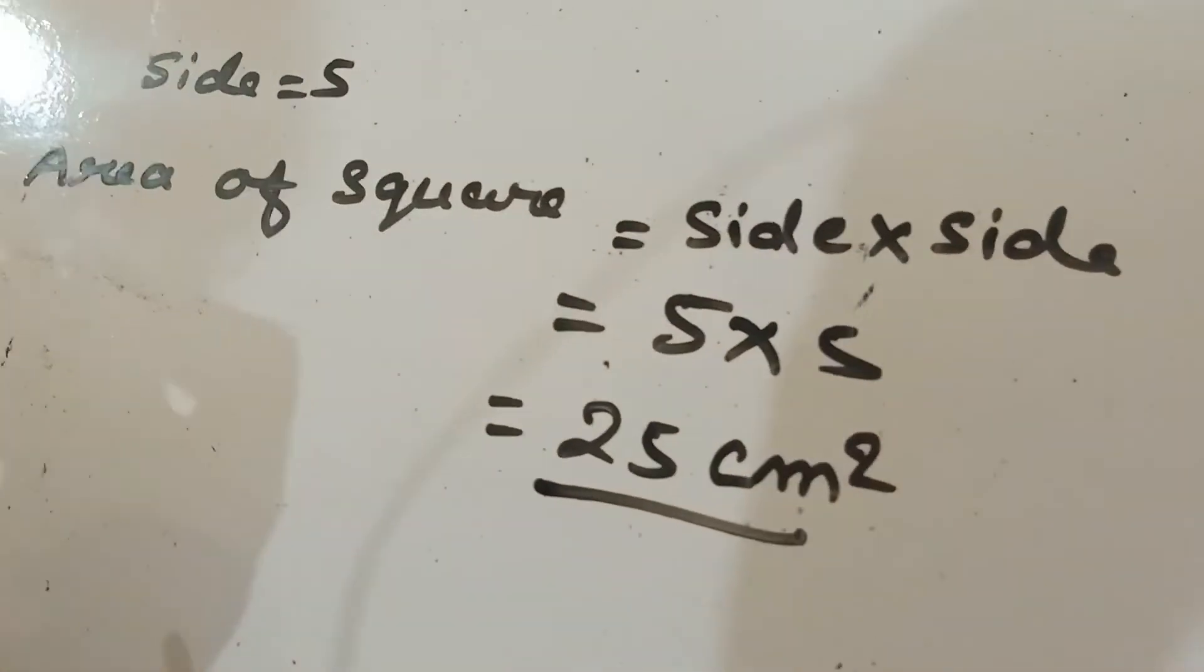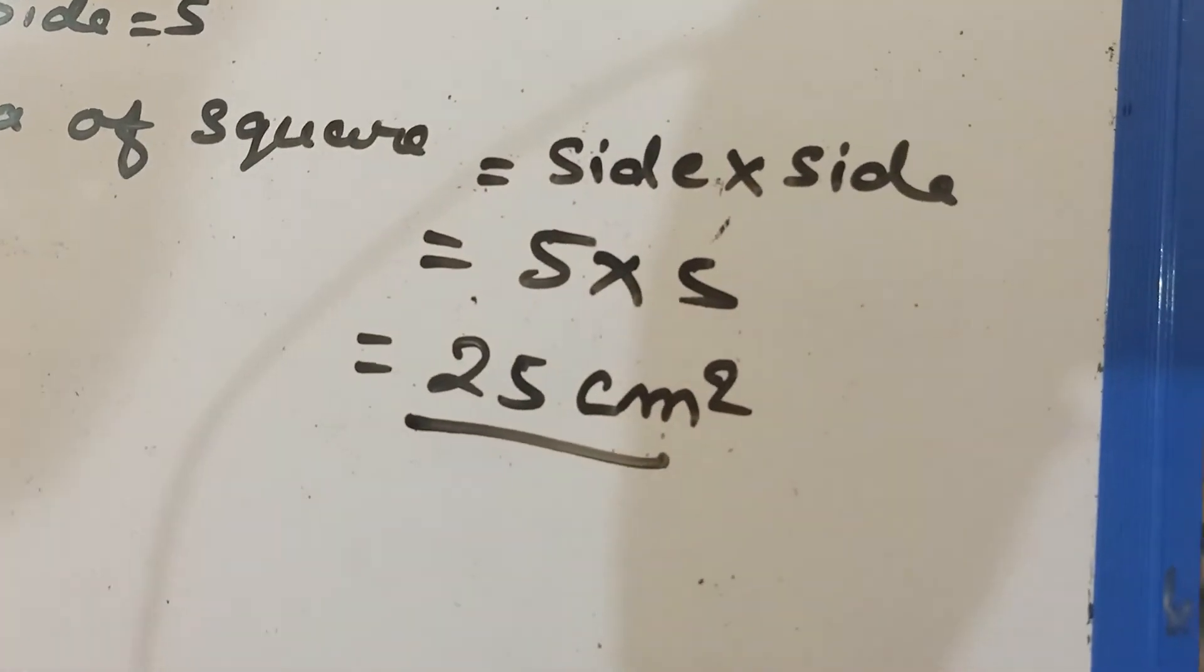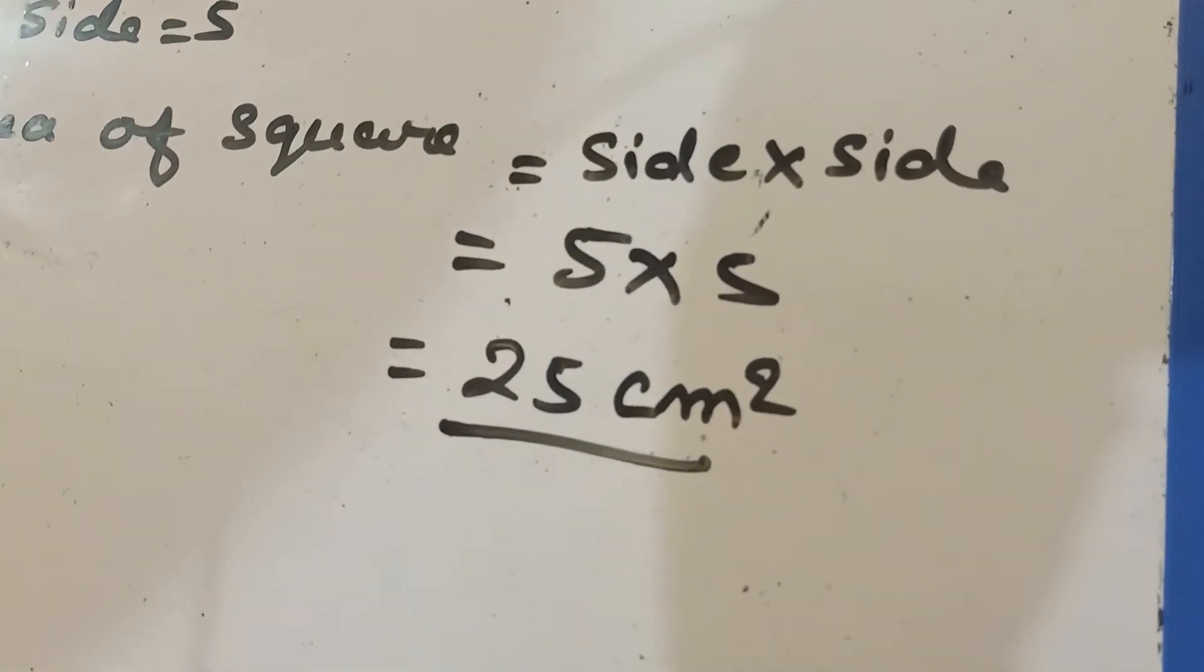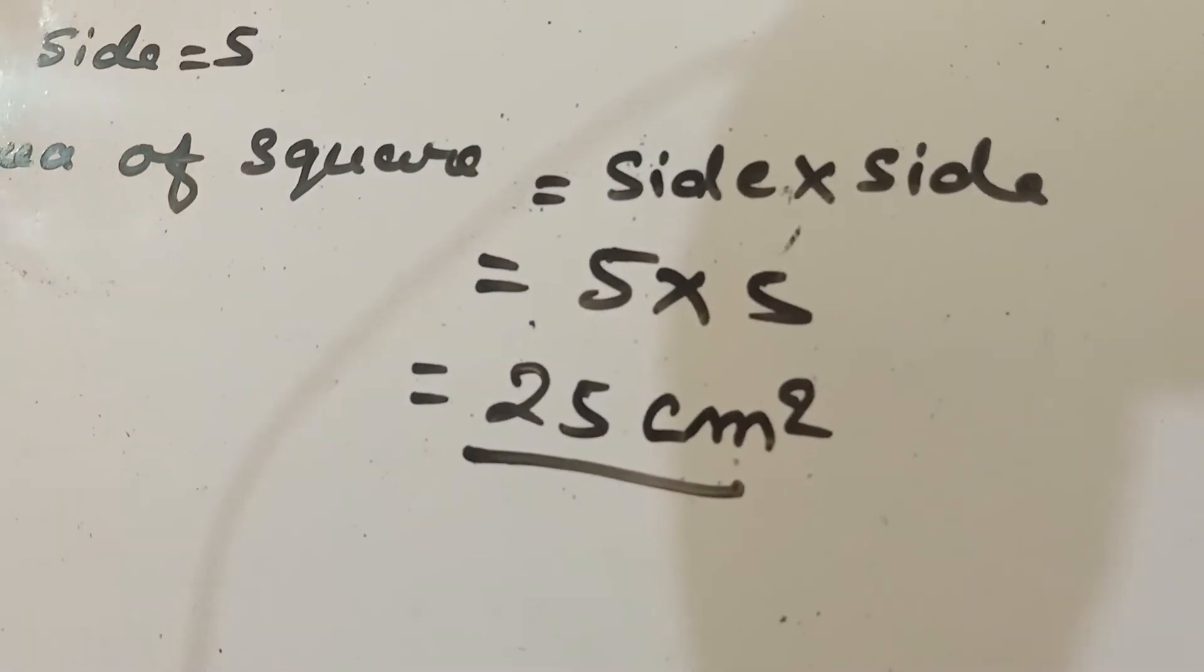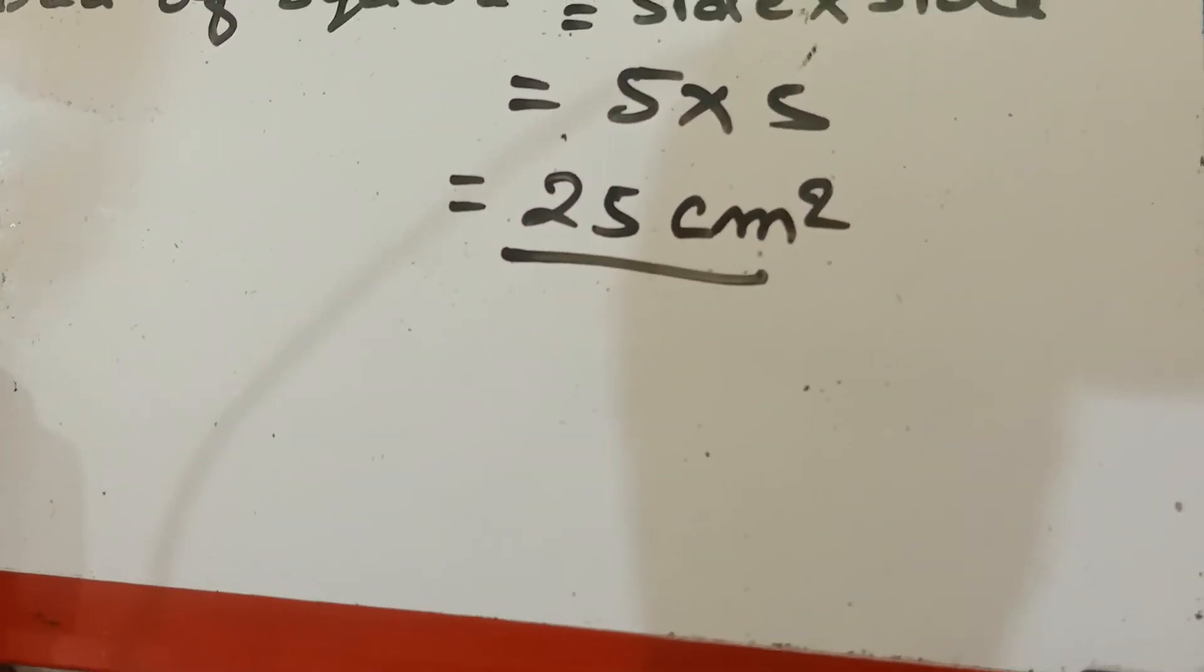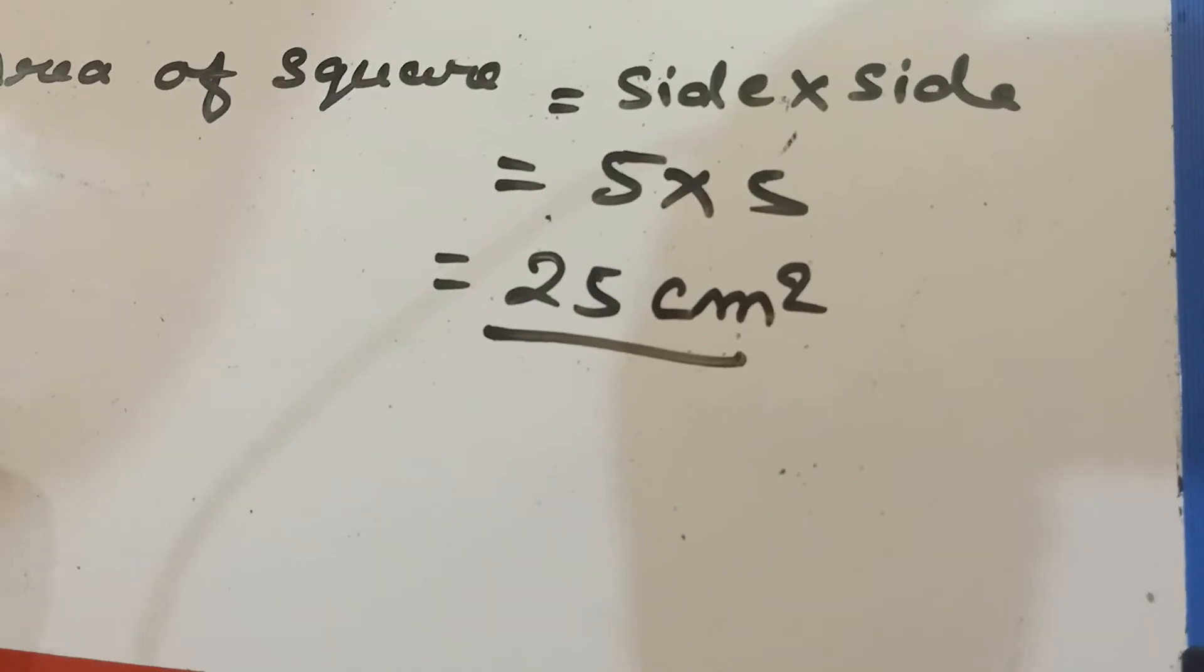Now, same you will do question number B, C, D. And after that, look carefully in question number four. It is the same thing. Find the area of following rectangles.